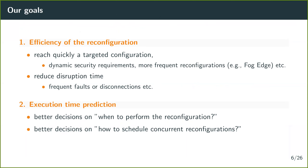In this work, we focus on two main aspects. The first is efficiency: the more efficient a reconfiguration, the faster we reach the new targeted configuration. This is useful when facing dynamic security requirements, frequent reconfigurations as in fog and edge computing, or when reducing disruption time during faults or network disconnection. The second goal is to predict the execution time of a reconfiguration, enabling better decisions on when to perform a reconfiguration and how to schedule concurrent reconfigurations.